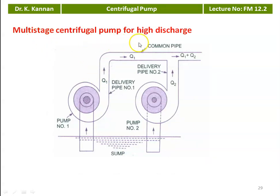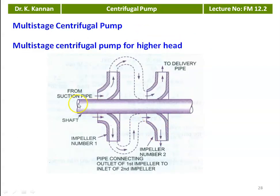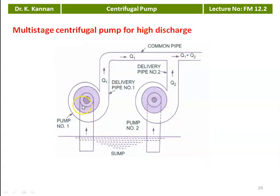For higher discharge, pumps are connected in parallel — this is two pumps working in parallel with two different shafts. Each pump has its own suction line; the discharge from pump one is Q1 and from pump two is Q2, giving total discharge = Q1 + Q2. This arrangement — pump in parallel — is used for pumping higher discharge in the system.